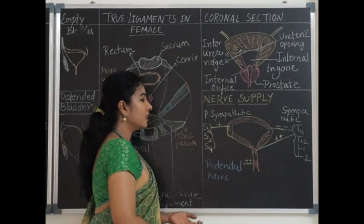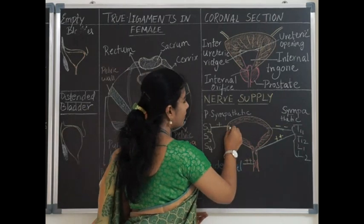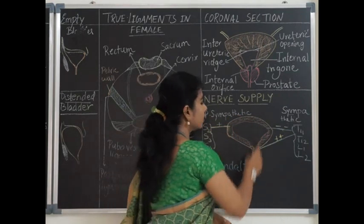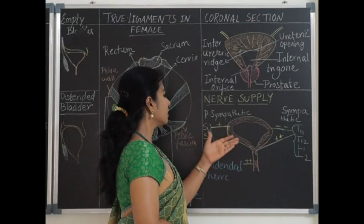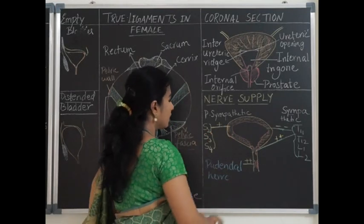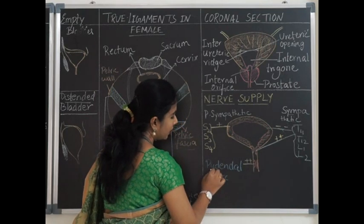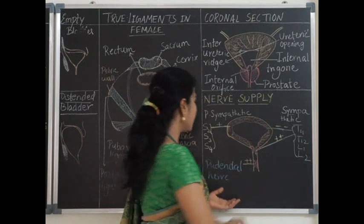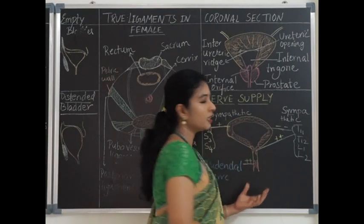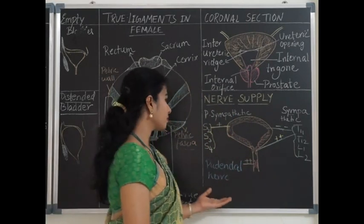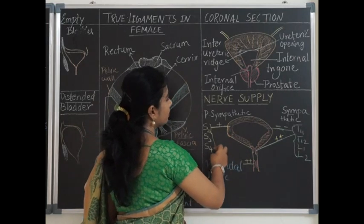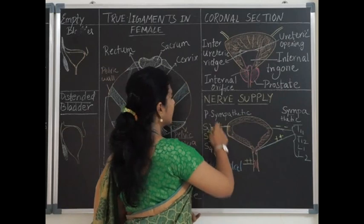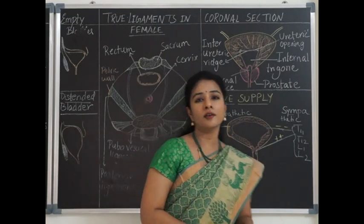The parasympathetic nerve supply has the opposite action — it is called the nerve of voiding, causing contraction of the detrusor muscle and voiding of urine. The external sphincter of the urinary bladder is made up of skeletal muscle and is supplied by the pudendal nerve, which provides voluntary control. The parasympathetic nerve to the bladder is called the nervi erigentes.